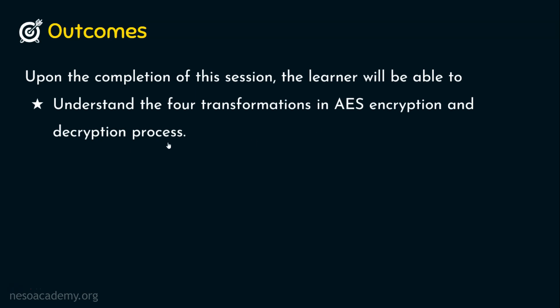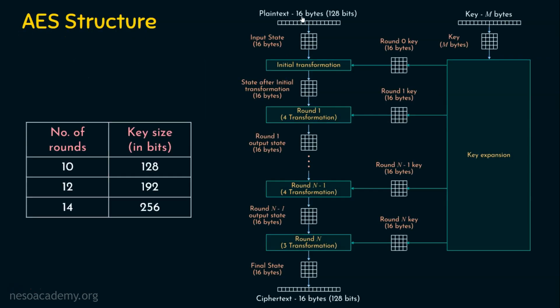Before seeing all four transformations, let's see what happens in the AES encryption and decryption algorithm. The input plaintext is converted into ciphertext and the key size can be varying — 128 bits, 192 bits, or 256 bits — but the plaintext size and ciphertext size remains the same at 128 bits. All rounds use a 128-bit round key, which is 16 bytes.